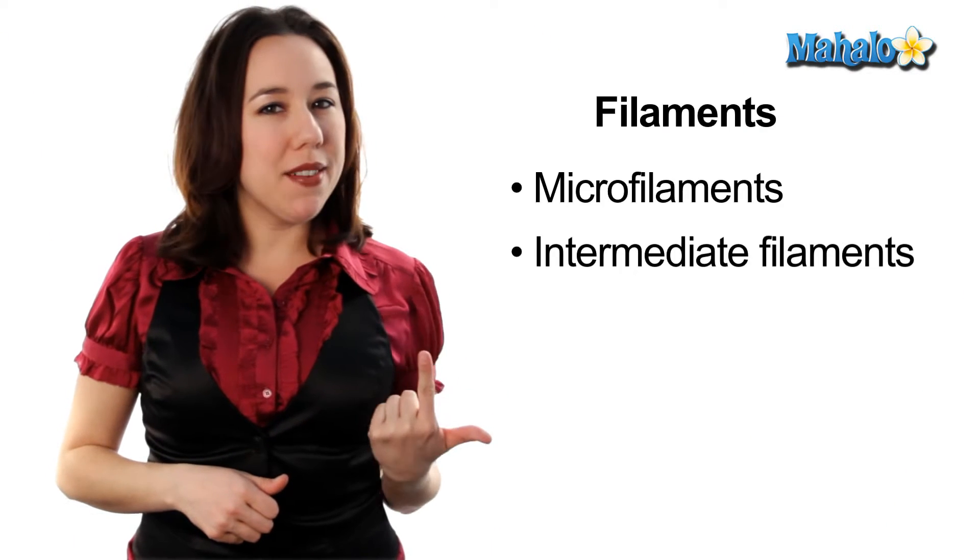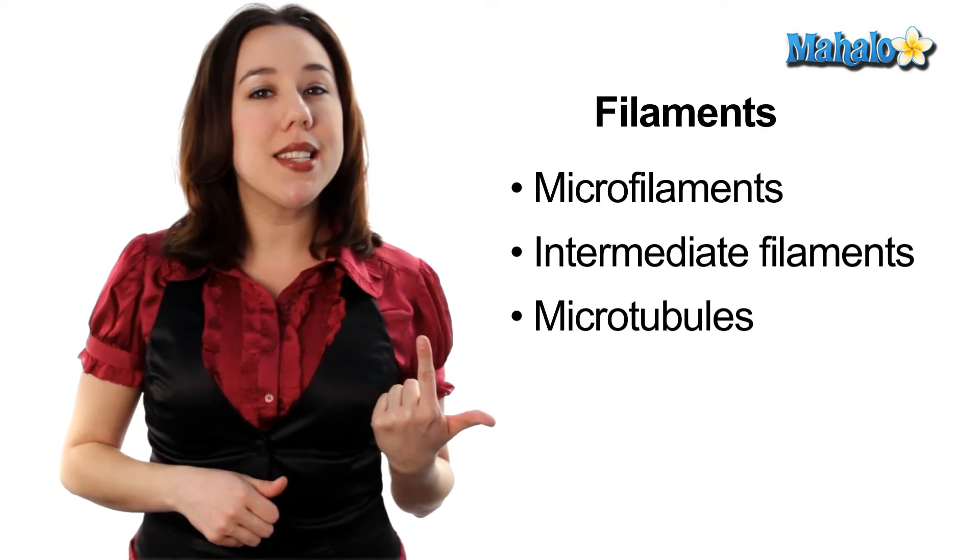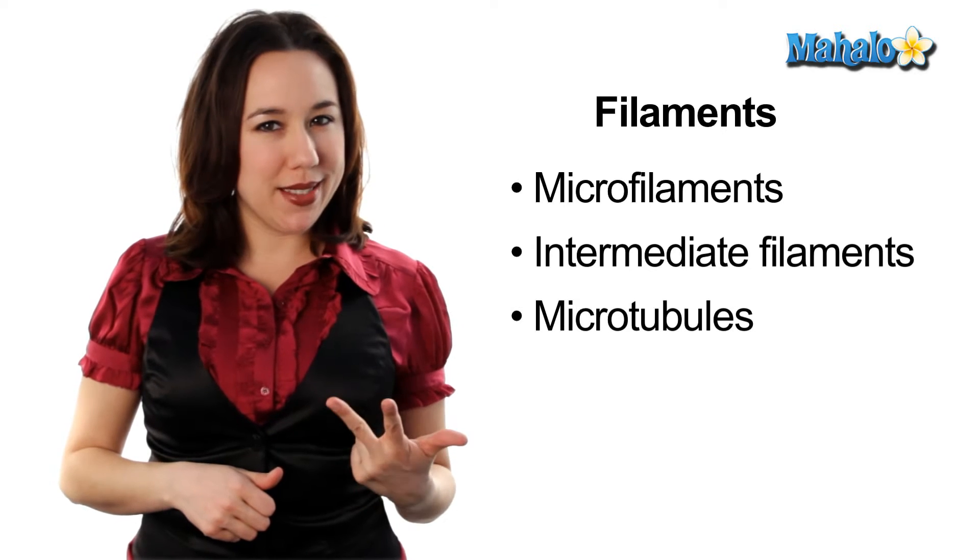In eukaryotic cells, like our own, there are three main types of filaments: microfilaments, intermediate filaments, and microtubules.